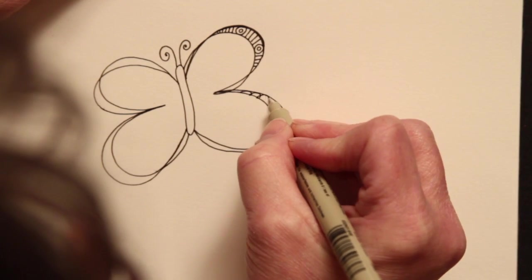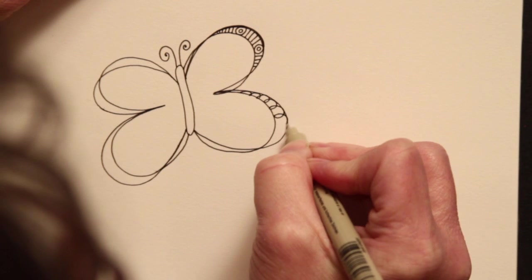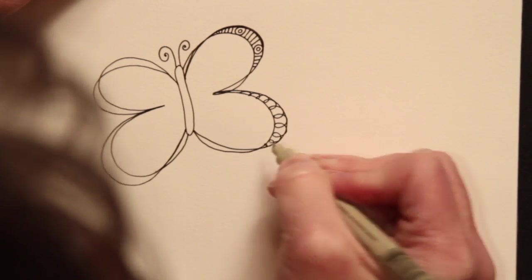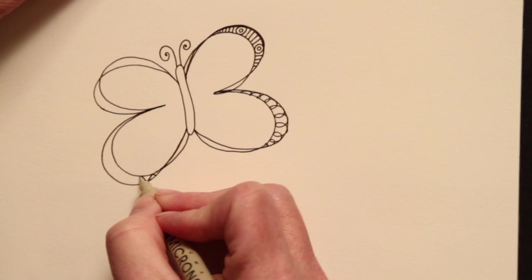The second pattern that we learned were the loops. And loops can be done in a big space or a small space. I'm going to put our triangle pattern over here.